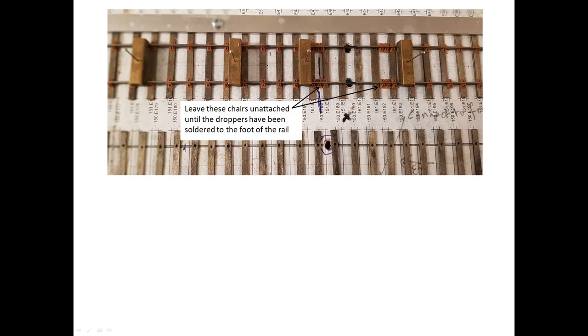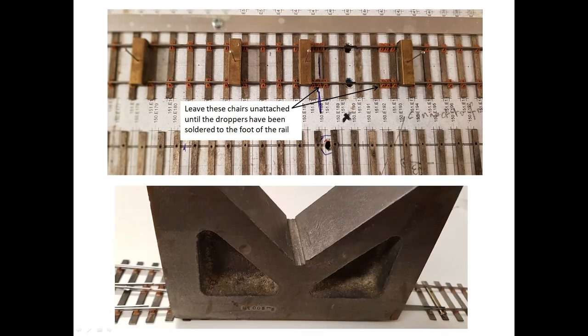I use butanone, also known as methyl ethyl ketone or MEK, to bond the chairs to the sleepers. Other solvents will do the trick, but I've not tried the new formulation of Mekpak, which I'm told is no longer MEK. I use a couple of heavy V-blocks to hold the sleepers down while the glue dries and subsequently to hold the rail down while the chairs bond to the sleepers, but a brick on a small sheet of MDF will do the trick just as well.